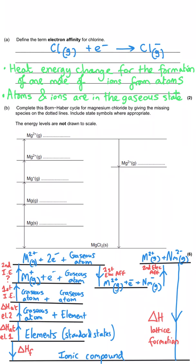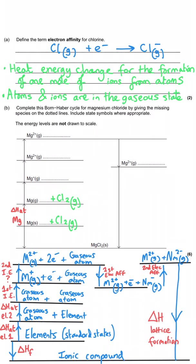Now we can fill in the cycle we've been given. Our first rung is the elements. Since we're making magnesium chloride and we already have magnesium, the other element is chlorine. The elements need to be in their standard states, so chlorine is a diatomic molecule in the gaseous state — Cl₂(g). The first arrow atomises the magnesium (it was solid, now gaseous), so chlorine stays exactly as it was on the line below, since we only atomise one atom at a time. The next arrow ionises the magnesium first — the exam questions follow that sequence even if chlorine would atomise at a lower energy.